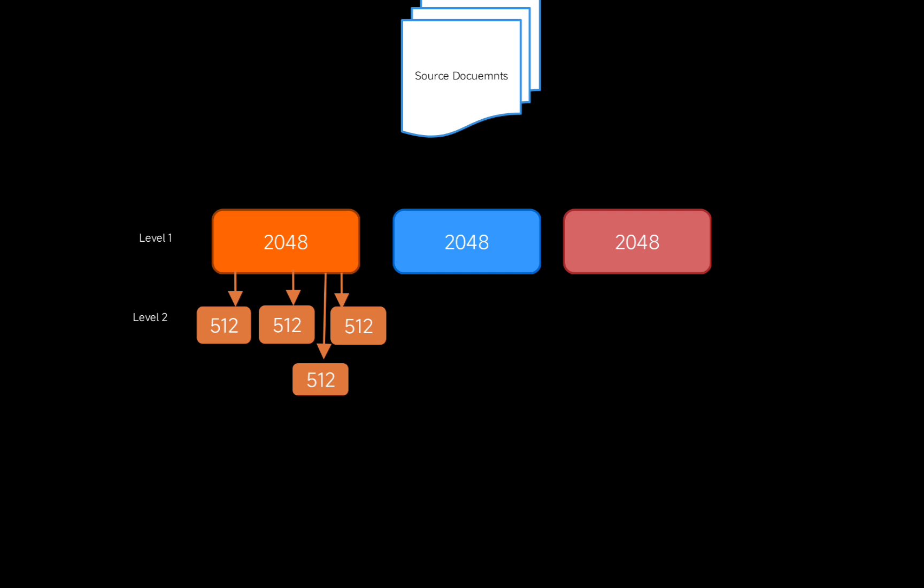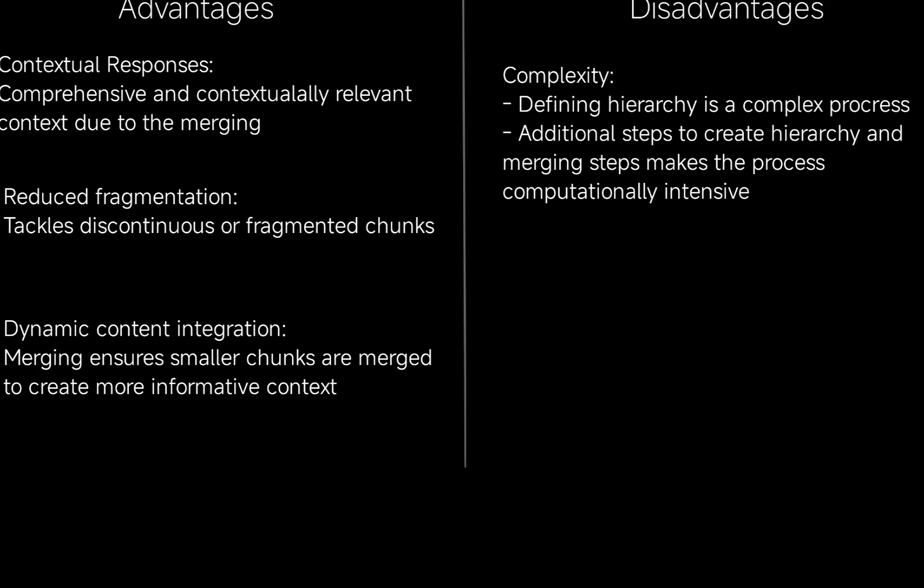Now let's talk about the advantages of auto merging retrieval. First, more comprehensive and contextually relevant context is retrieved during the retrieval phase — if chunks are not coherent, the parent chunk is retrieved, giving more contextual responses from the LLM. Second, it reduces fragmentation by tackling discontinuous or fragmented chunks. Third, dynamic content integration ensures smaller chunks are merged to create more informative context for the LLM to generate the final response.